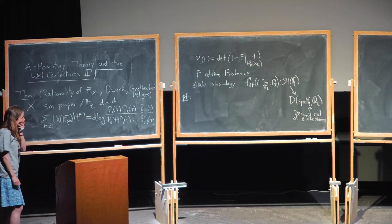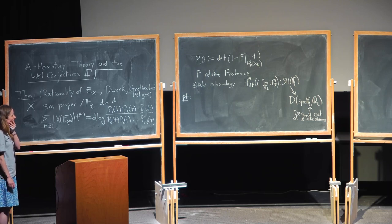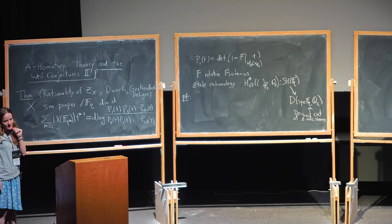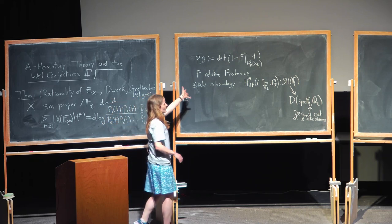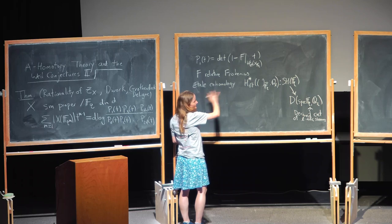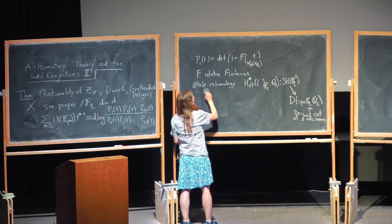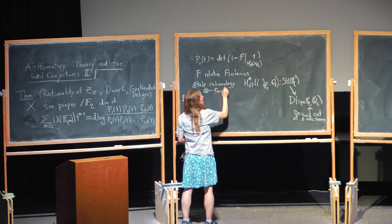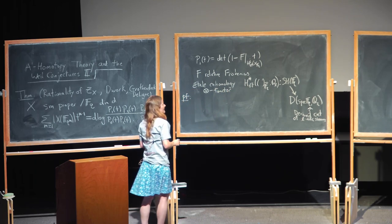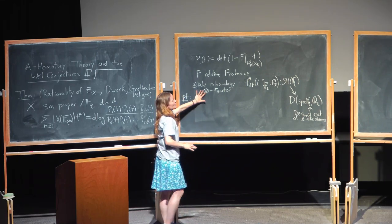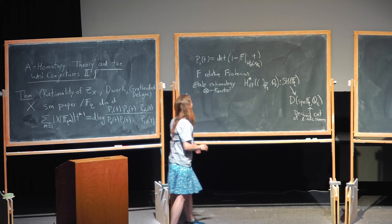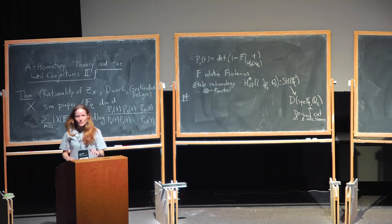The H^i are vector spaces over Q_ℓ of finite dimension with an action of Galois. We can compute the trace after applying any functor that preserves the structure we used to define trace — namely, the tensor product. So the purpose for writing this down is to say that étale cohomology preserves the symmetric monoidal structure; it's a symmetric monoidal, or tensor, functor. So we can compute the trace after applying étale cohomology, and that's all we need before doing this formal manipulation.